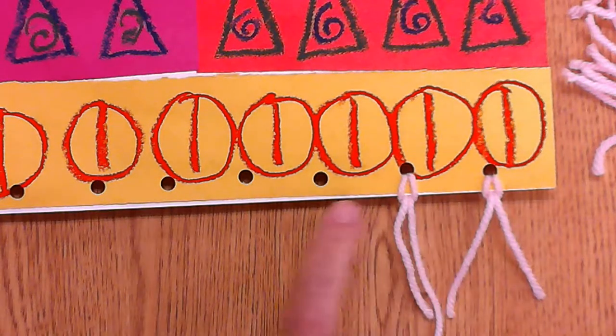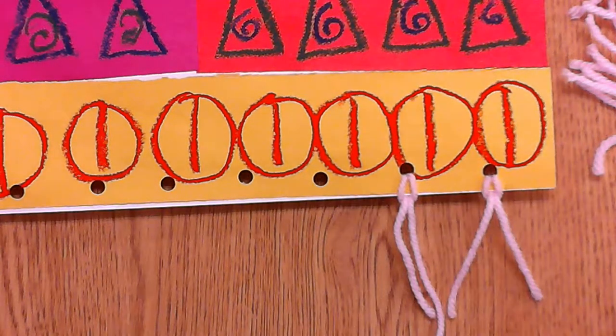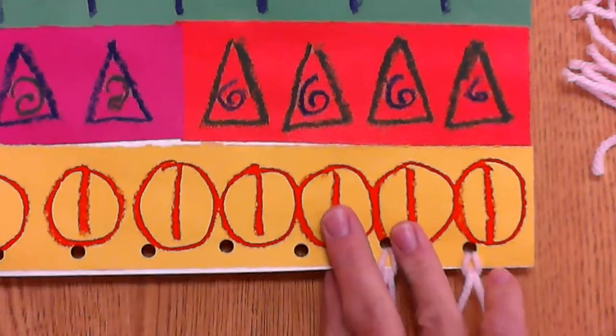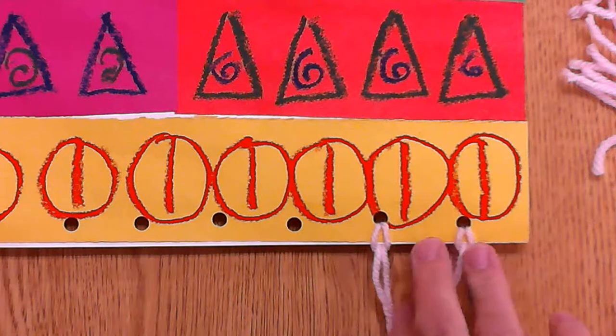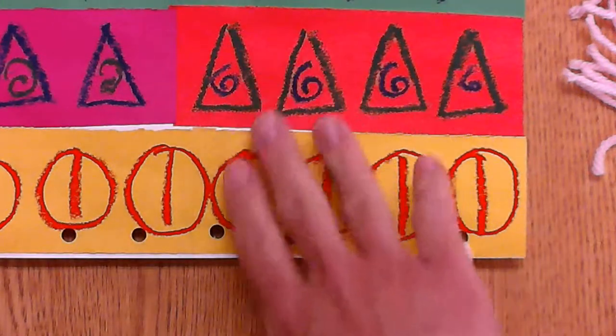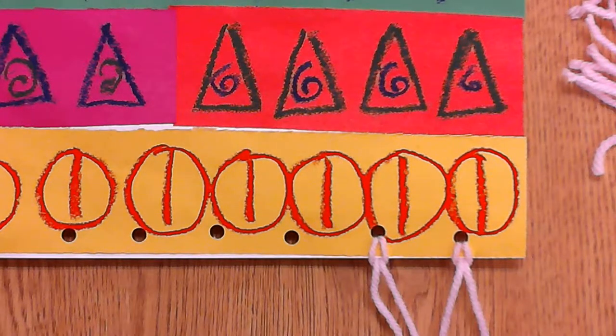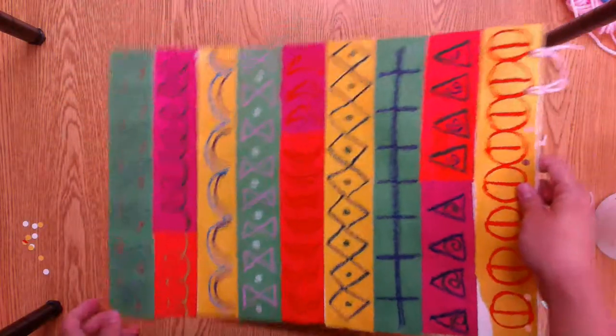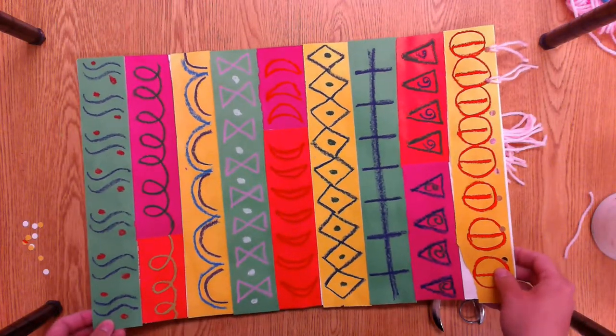So you're going to do that the whole way across, and I will show you the example of the finished Serape when this video is all done. Please make sure you put your paper in the finish box when you're all done with your patterns and your fringe, and your Mexican Serape is complete.